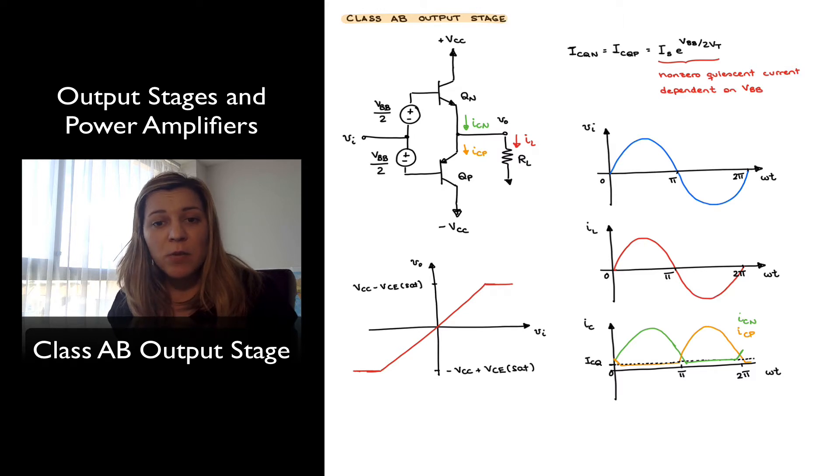Versus the Class B output stage where the quiescent current through the transistors was essentially zero, and the transistors were only conducting when an input signal was applied to the circuit. So it had better power efficiency than the Class A, but because there was a deadband region where the input signal was in between plus minus 0.7 volts, that generated some crossover distortion, so not a very linear response.